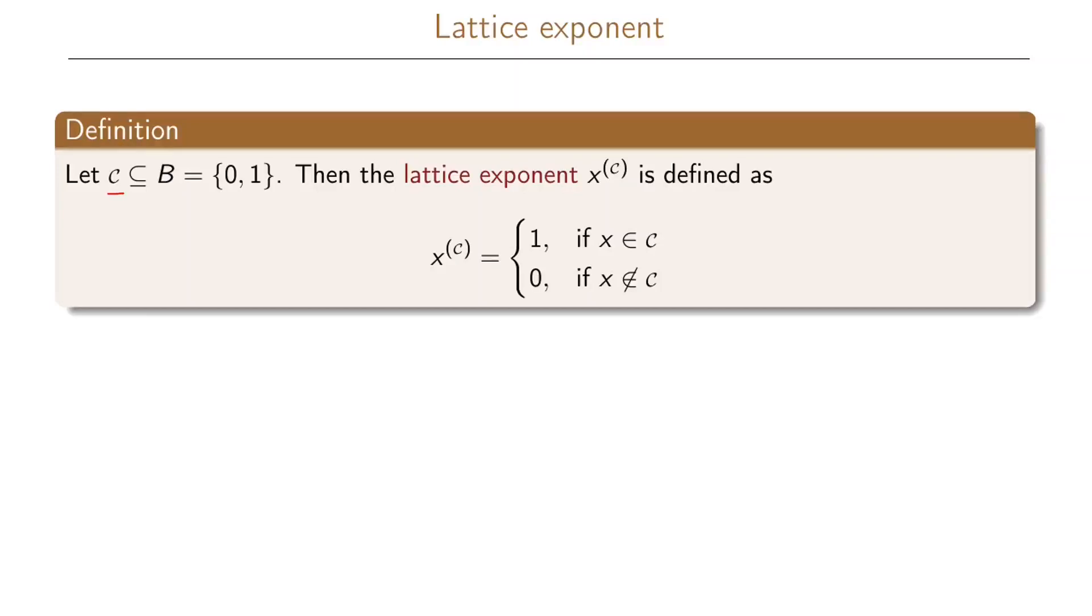So let c be a subset of B which in turn is the set of 0 and 1. Then the lattice exponent x^c is defined as x^c equals 1 if x is in the set c, and it will equal 0 if x is not in the set c.